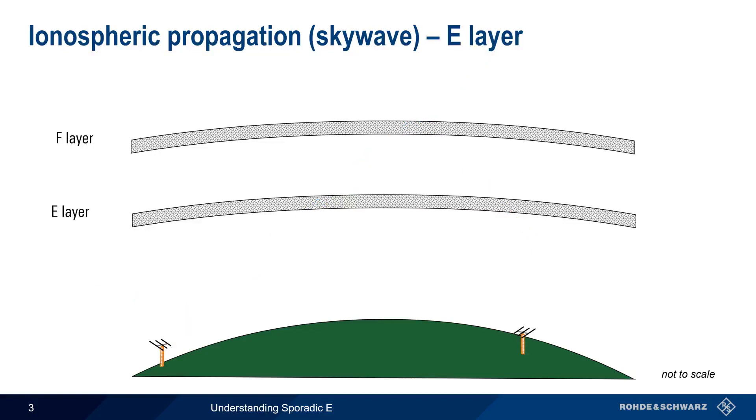However, under special circumstances, patches or regions of increased ionization in the E layer can refract signals at lower VHF frequencies, thus enabling limited skywave propagation over longer distances.